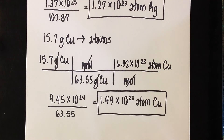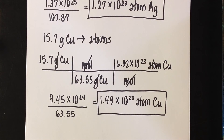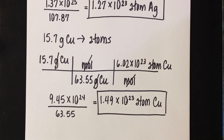One challenge: if you're a student at home, get a piece of aluminum foil, crumple it up, take its mass — that's pure aluminum — and convert it to atoms using these conversions. If you do that, drop me a comment and let me know. It might be worth a little extra credit. Practice these a few times, and the next video will cover going from atoms to grams, with some additional problems.